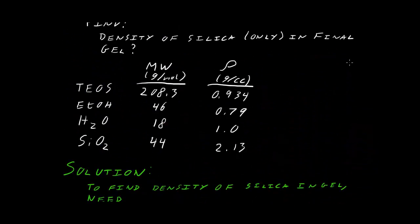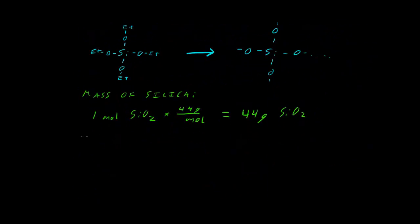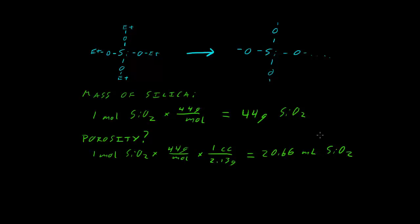Now let's take a look at just how light that is. If it's 75 milligrams per cc, what is the porosity of that? Just how much of this is solid network and how much of it is just open air? To get the porosity, we know we have that one mole of SiO2 times molecular weight gives us 44 grams of SiO2 divided by the density of SiO2 is 20.66 cc or milliliters of SiO2.